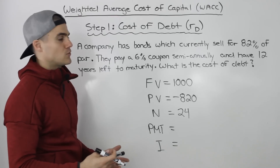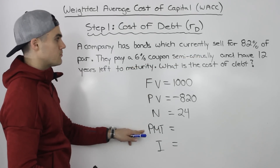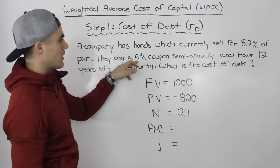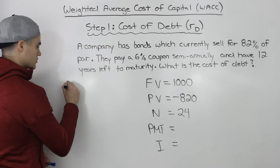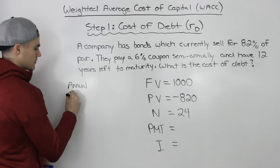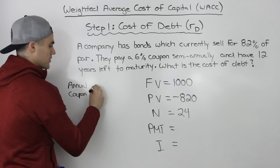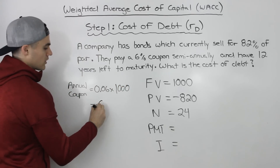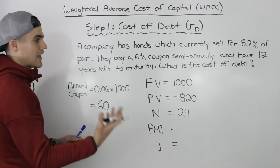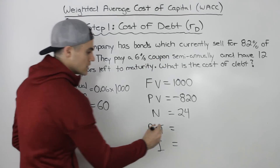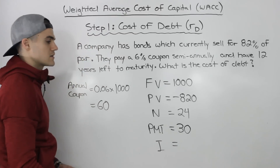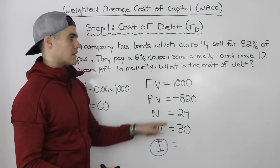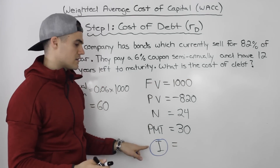Basically there are 24 semi-annual periods in 12 years. The payment represents your coupon payment. We're told we have a 6% coupon paid semi-annually, and any coupon rate given is always in annual terms. So to find the annual coupon, we take the coupon rate of 6% — 0.06 — and multiply it by the face value of $1,000, giving us an annual coupon of $60. But because it's a semi-annual coupon, we divide $60 by two. So the semi-annual coupon payment is $30. Now we're going to solve for I — the yield to maturity — because cost of debt is just the yield to maturity of a bond.